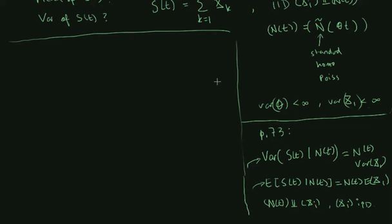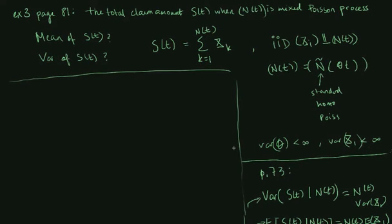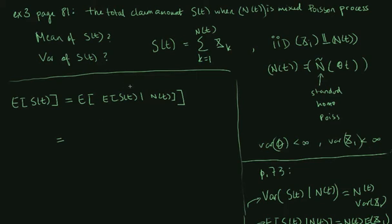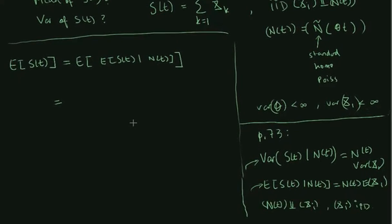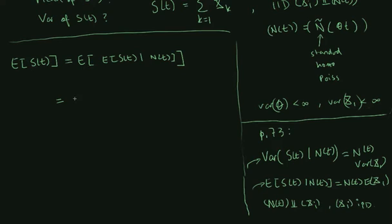We will take these as given and calculate the mean of the total claim amount in the mixed Poisson process. Using the double expectation property, the mean of S is the mean of the conditional mean of S given N, which equals the mean of N(t) multiplied by the mean of X1, giving us the mean of N(t) times the mean of X1.